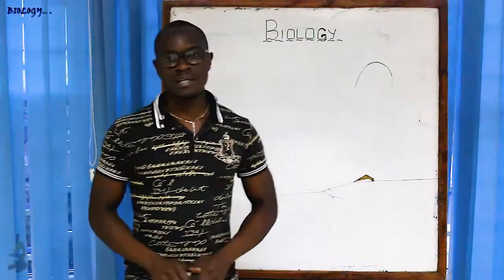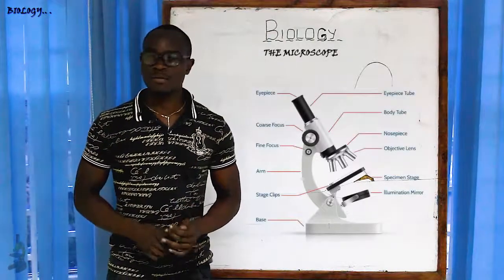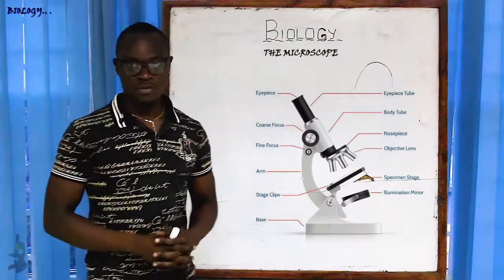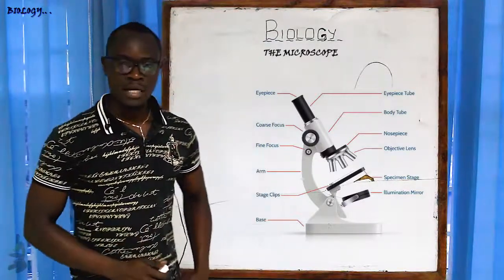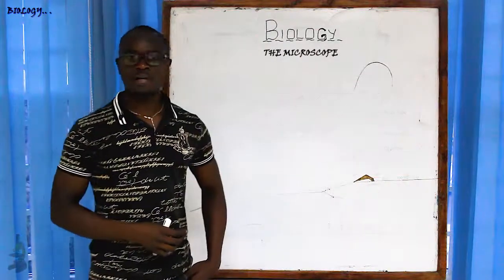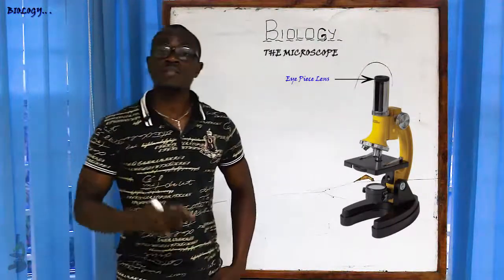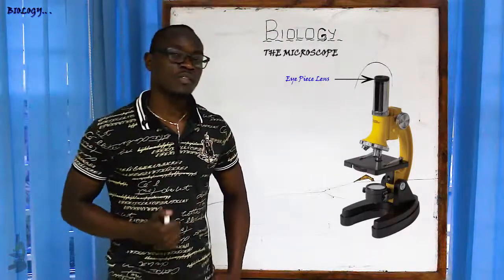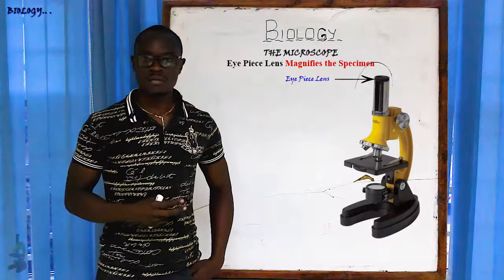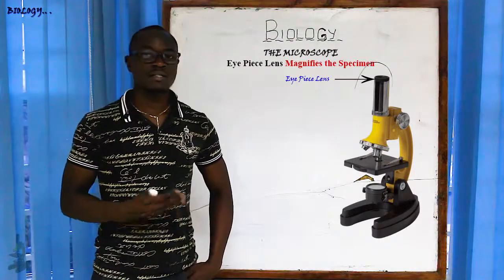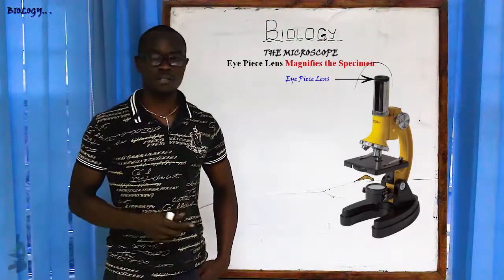Welcome to this next class where we will discuss the microscope and all its parts — what each part is used for. Let's begin from the top to the bottom, starting with the eyepiece lens. The function of the eyepiece lens is to magnify the specimen which is on the stage, where we keep all the slides containing the specimen.